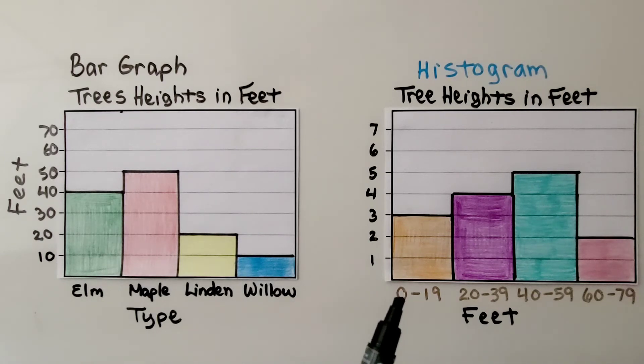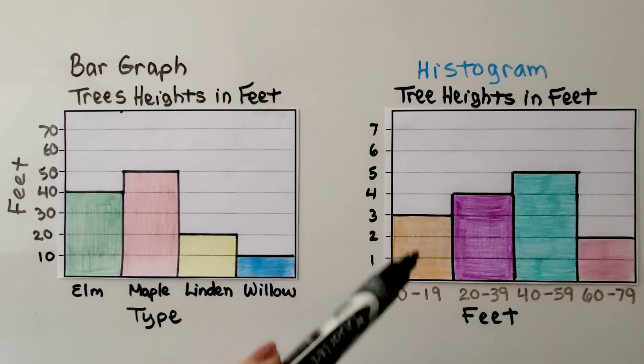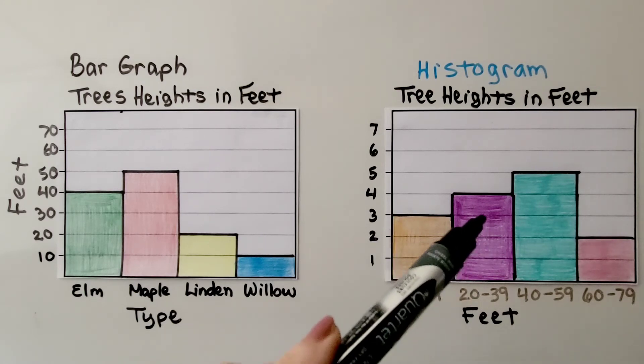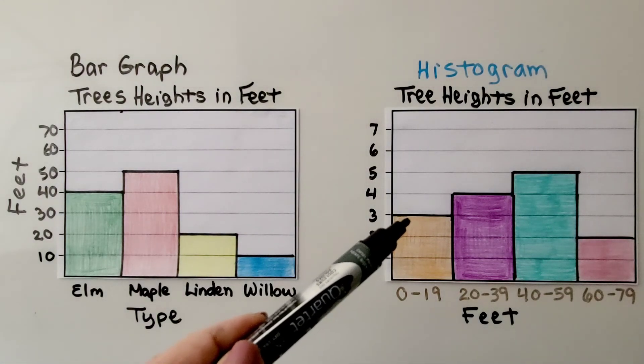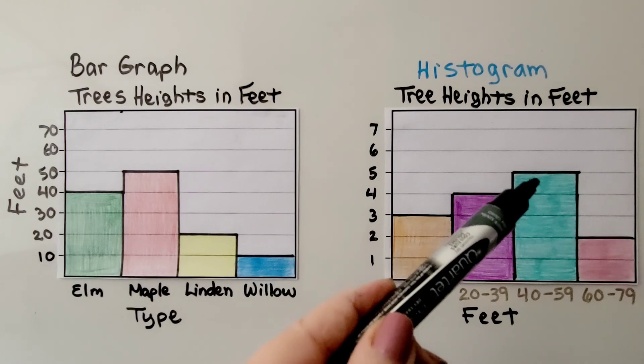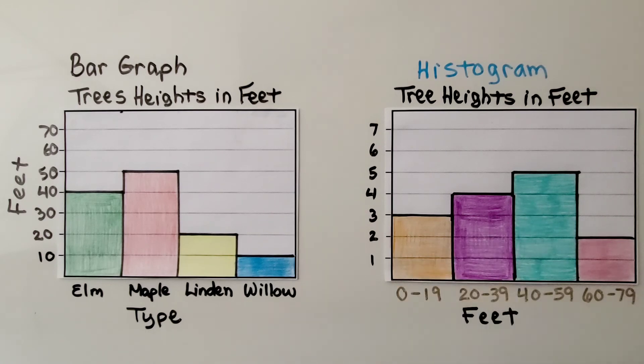Now for the histogram, we're starting from 0 to 19 feet in height. And we can see that there's three trees that fall in that interval. For 20 to 39 feet, there's four trees that fall in that interval. So this shows a total in feet. This shows an interval of feet. The bar graph is showing data for one, two, three, four trees. The histogram is showing data for three plus four plus five plus two trees. That's 14 trees for data here. Where here we only have data for four trees.